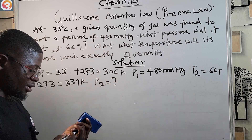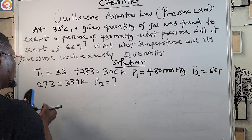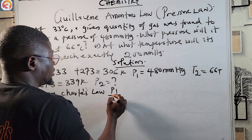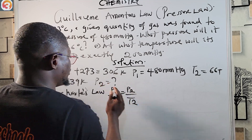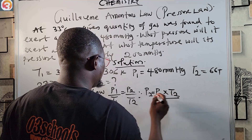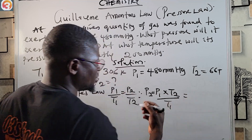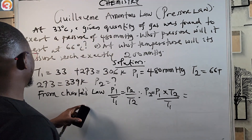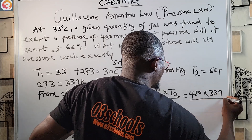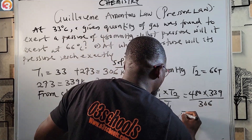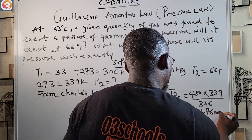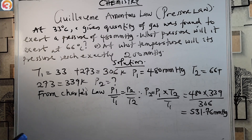Using the Pressure Law formula P1/T1 = P2/T2, we rearrange to get P2 = P1 × T2 / T1. Plugging in: P1 is 480, T2 is 339, T1 is 306. Pressing the calculator gives us P2 = 531.76 millimetres of mercury.